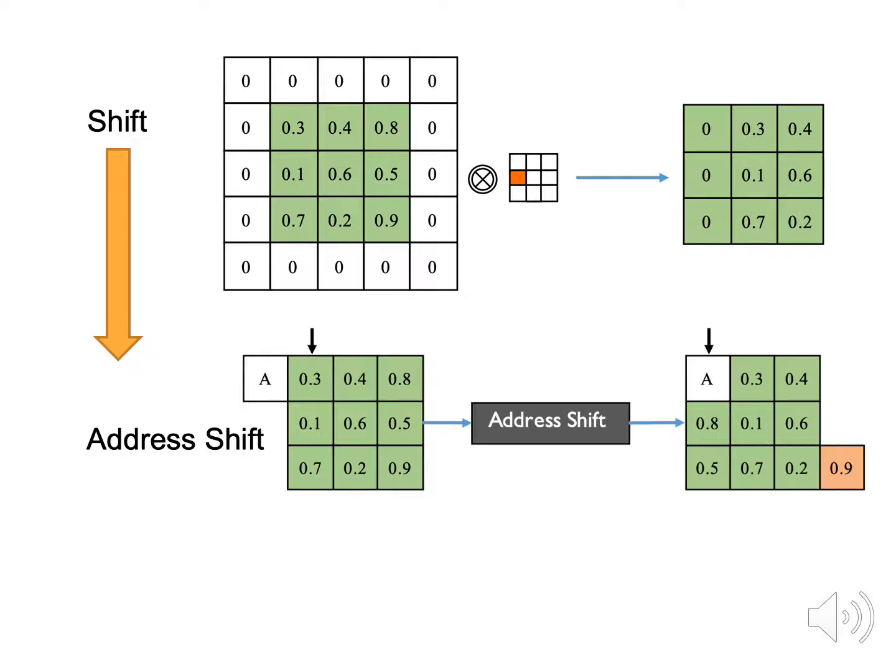The last operation is address-shift. The feature-map-shift can provide the equivalent function of spatial convolutions with zero FLOPs and no parameters. Despite all this, feature-map-shift in ShiftNet still consumes inference time heavily. Therefore, we propose address-shift. A shift-pointer is offset by one unit ahead of the starting address of the feature-map and is pointed to address A, showing in the fig below.